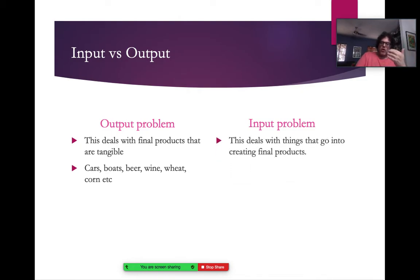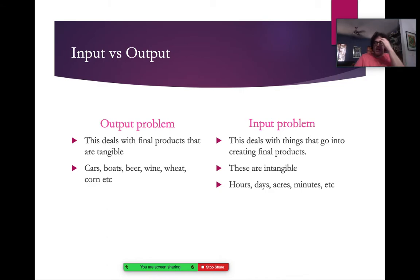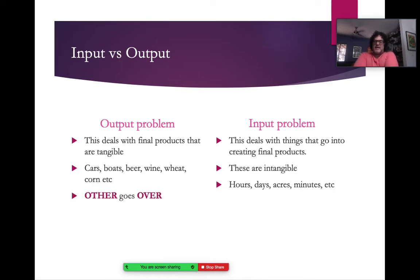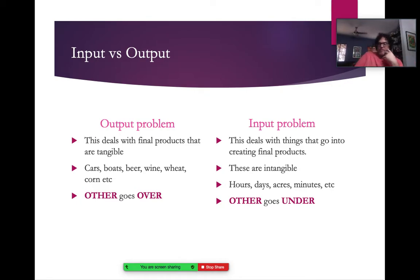Input problems deal with the things that go into creating the final products. These are intangible. An input problem would ask: how many hours does it take to make a car? How many days does it take to paint a house? How many acres does it take to grow wheat? The mnemonic device to solving an output problem is 'other goes over,' and there's only one other place to be — if you can't go over, you go under. So to solve an input problem, it's 'other goes under.'